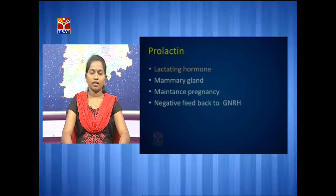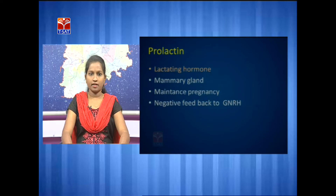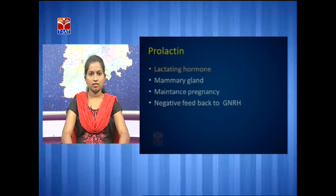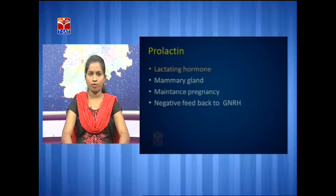The next hormone is prolactin. Prolactin stimulates the mammary glands to produce milk during pregnancy. It maintains pregnancy by giving negative feedback — sending negative signals to gonadotropin releasing hormones and stopping ovulation during pregnancy. Due to the increased serum concentration during pregnancy, the size of mammary glands increases. This hormone prolactin is also called lactating hormone.